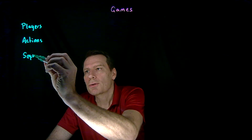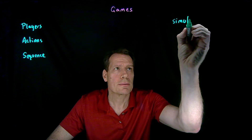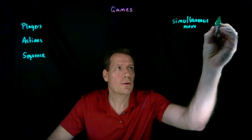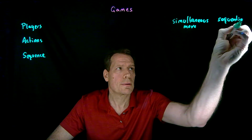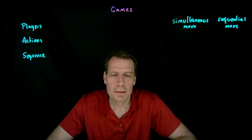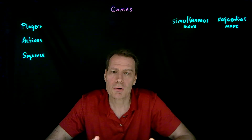The third thing we have to specify is what we call the sequence of the game — do some players get to move first, or do all the players move simultaneously? This allows us to distinguish between two types of games: simultaneous move games and sequential move games. Our example of the employer and the job applicant is a sequential move game. The employer moves first and offers a wage, and then the employee decides whether to accept or reject that wage after observing it.